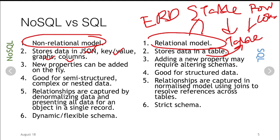In NoSQL, new properties can be added on the fly, meaning that if you have another attribute, you can add it without altering the schema. But with SQL databases, if you add a new property, you need to alter the schema first — for example, you need to alter the ERD.